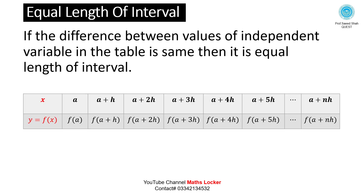In the table, we write independent variable x and dependent variable y. The difference between independent values is the same: (a+h) minus a is h, (a+2h) minus (a+h) is h, continuing until (a+nh) minus (a+(n-1)h) equals h. This is the equal length of interval.